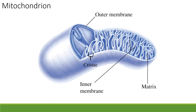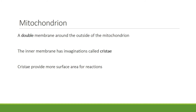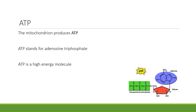Here is a drawing of a mitochondrion showing the outer membrane, which is smooth, the inner membrane, which has finger-like projections or invaginations known as cristae, and a fluid central area known as the matrix. The mitochondrion has a double membrane around the outside. The inner membrane has invaginations called cristae, and the purpose of the cristae is to provide more surface area on which reactions can occur. The job of the mitochondrion is to produce ATP, which is a very high energy molecule.